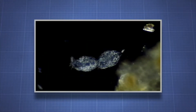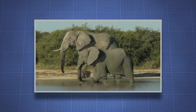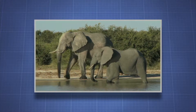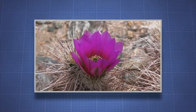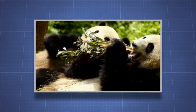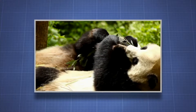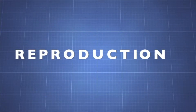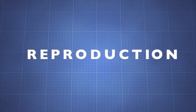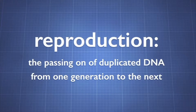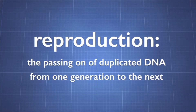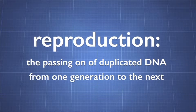Every living thing on Earth, from the tiniest one-celled organisms to the biggest animals and trees, is the result of reproduction. Organisms can continue living even if they never reproduce. However, without reproduction, life would not be able to perpetuate itself. Reproduction is a basic property of life, based on individuals passing on duplicated DNA from one generation to the next.